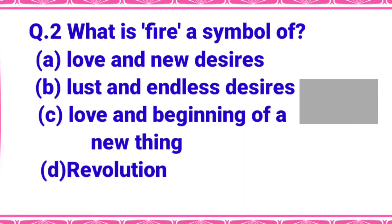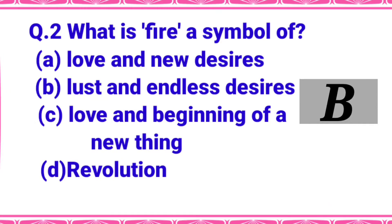What is fire a symbol of in this poem? Option A: love and new desires, B: lust and endless desires, C: love and beginning of a new thing, or D: revolution. Your time starts now. The right answer is option B - lust and endless desires. In this poem, Robert Frost tells us that the world is going to end, and it will end in two ways - either by fire or by ice.